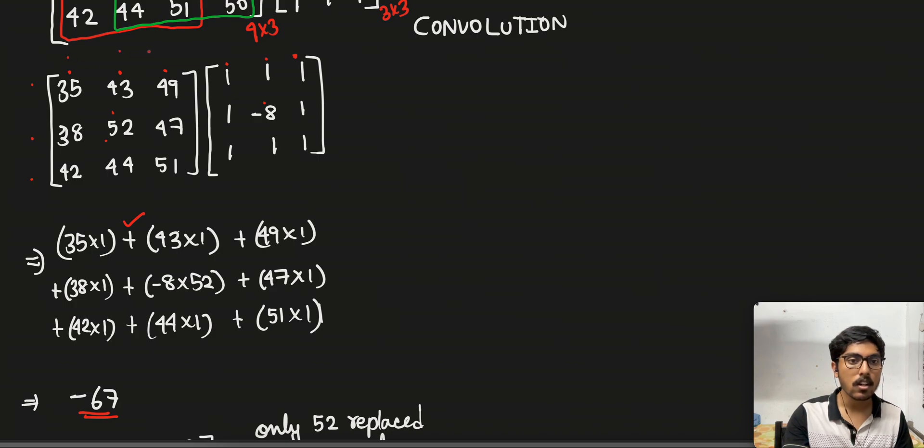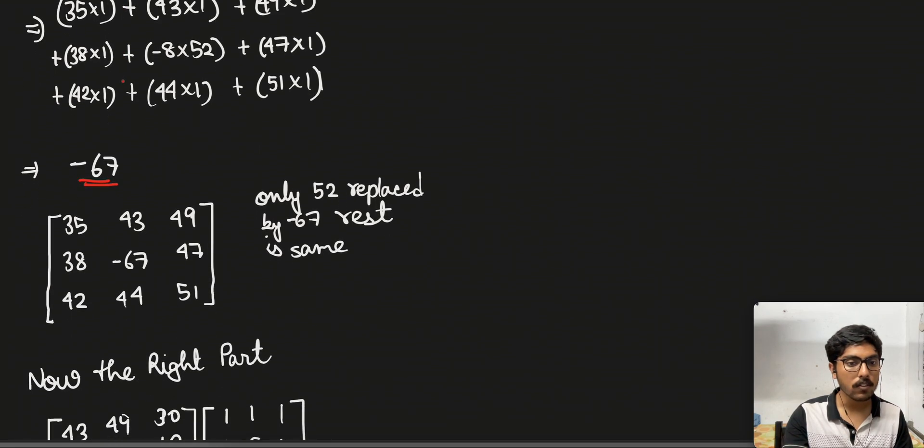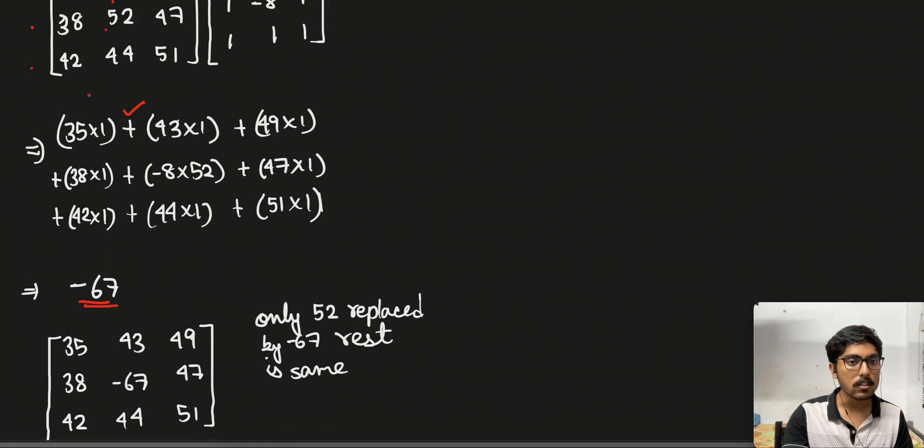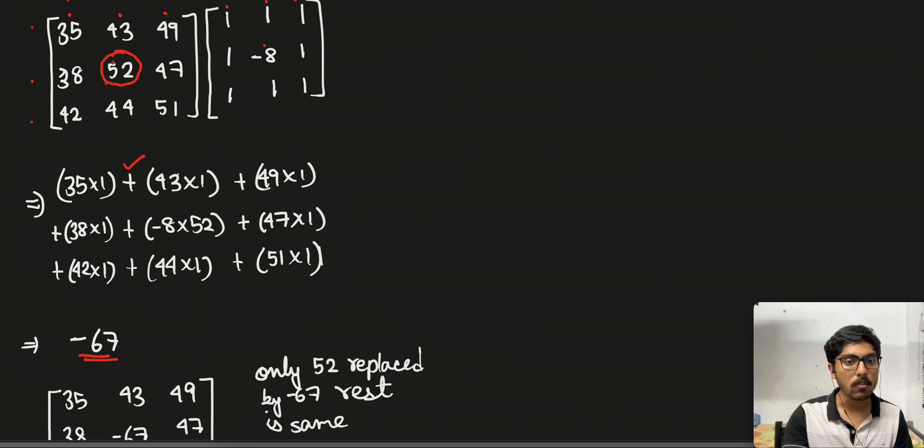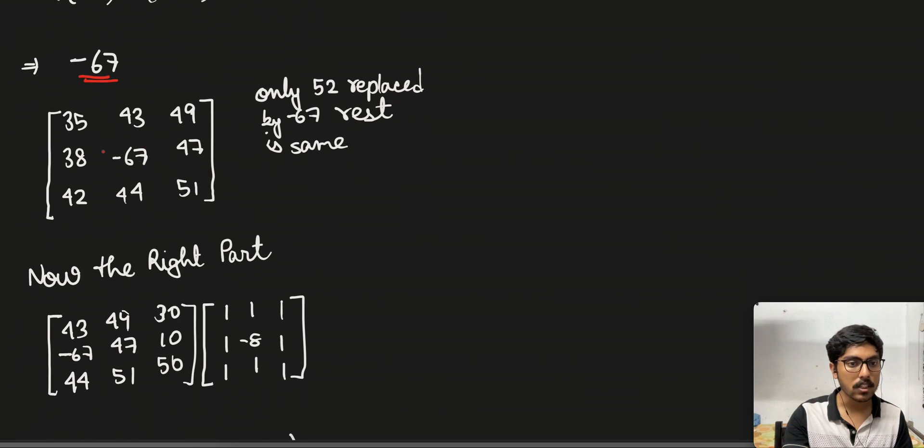But for the simplicity of this problem we will only consider the middle pixel to be convoluted. So we have just changed it to minus 67 now and the rest of all the values remain the same.